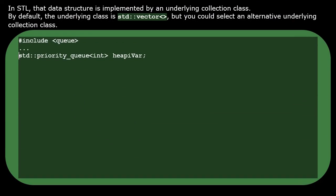In STL, by default, the underlying collection class is a vector, but you could select an alternative underlying collection class.